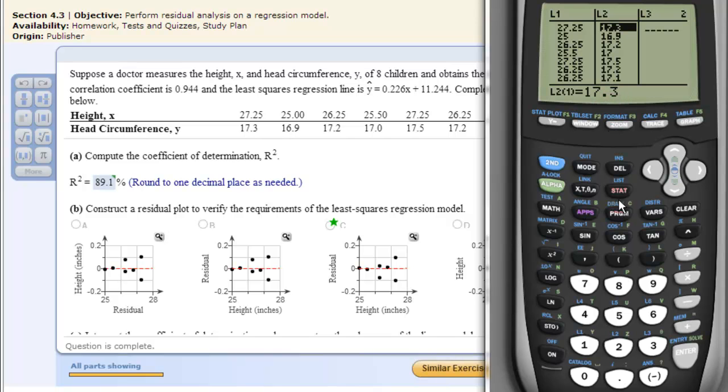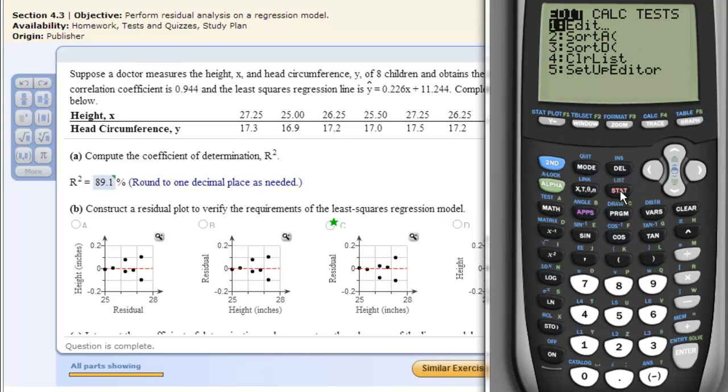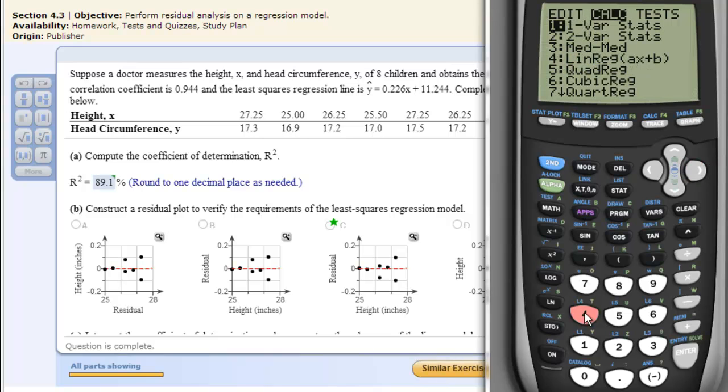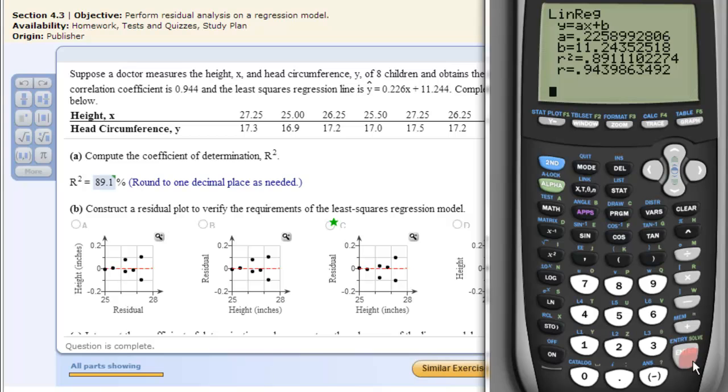Alright, now we need to find the coefficient of determination, capital R squared. We do that by hitting stat, calc, and then down to line reg, number 4, enter. And on the calculator, it's little r squared, but that's the coefficient of determination.